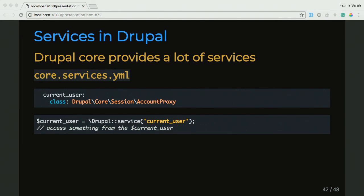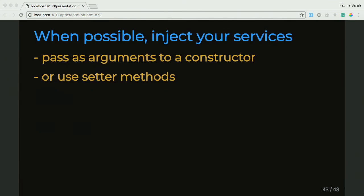An advantage for services is that they lazy load — they're globally available, and they don't take up a lot of memory. Only when you use them is when they use up memory. So we're going to move on. I keep saying we're loading the service globally, but there is another way to load our services, and that's dependency injection. When possible, you want to inject your services. You can pass them in as an argument to your constructor, or you can use setter methods to load in your service containers. Rather than calling that global service, it's better to load services into your class and then use them that way. Many of the controller and plugin classes that Core provides use this pattern.